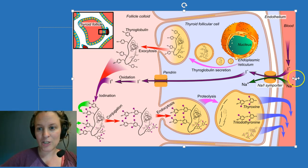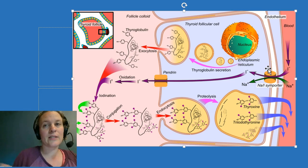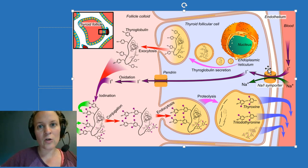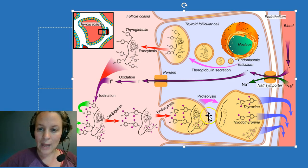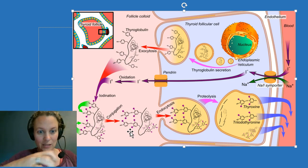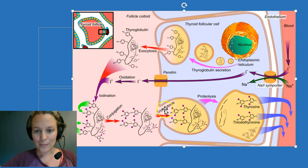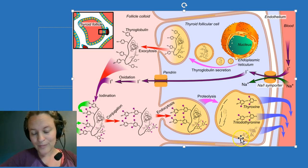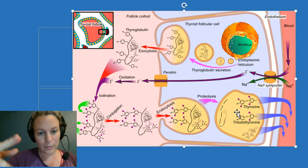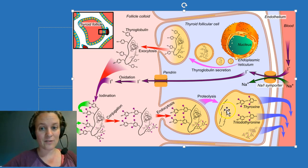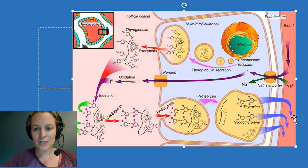And at that point, when TSH comes along and binds to this thyroid cell, telling the thyroid cell, hey, TSH is saying, hey, thyroid hormone levels are a little low, I think we could use a little bit more in the blood—what will happen is this process of endocytosis, where some of the colloid will be kind of sucked back into the thyroid cell, forms a little vesicle here. And lysosomes in this vesicle will clip off the T3 and the T4. And then, of course, because it's fat-soluble, it will diffuse into the bloodstream and circulate there.